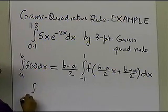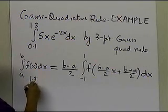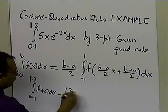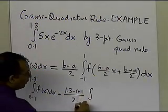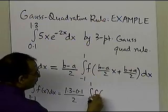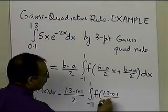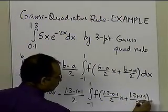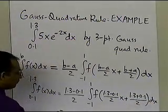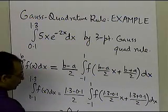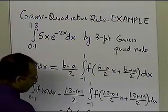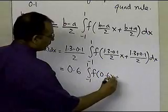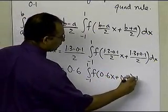So in this case we are finding the integral from 0.1 to 1.3 of f(x) dx. This becomes (1.3 minus 0.1) divided by 2, times the integral from minus 1 to plus 1 of f evaluated at (1.3 minus 0.1)/2 · x + (1.3 plus 0.1)/2, dx. This simplifies to 0.6 times the integral from minus 1 to plus 1 of f(0.6x + 0.7) dx.